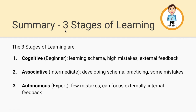A quick summary of what you've learned about the three stages of learning. The first stage is the cognitive or beginner stage — this is when we're learning the schema, the mental picture of how the skill works. High mistake ratio, and we require external feedback from coaches or others. With time and deliberate practice we progress to the associative or intermediate stage — still developing the schema, lots of practice, making some but fewer mistakes. Then with more time and deliberate practice we reach the autonomous or expert stage — fewer mistakes, can focus externally on tactics, strategies, and opposition positioning, and we use internal feedback: the feel, sound, and sight of the skill. Thanks very much for watching — if you have any questions leave them in the comments and stay tuned for the next video.